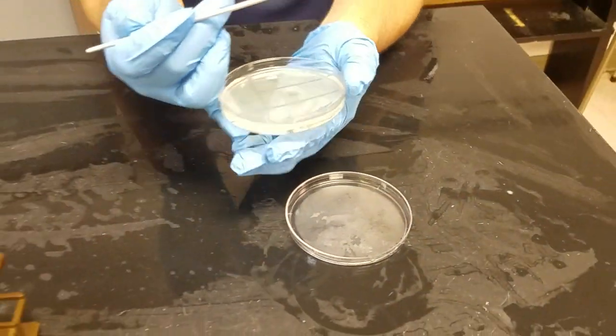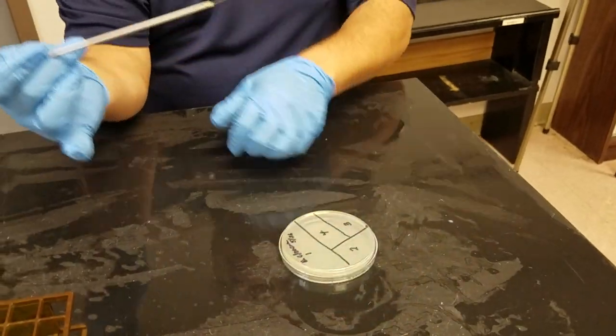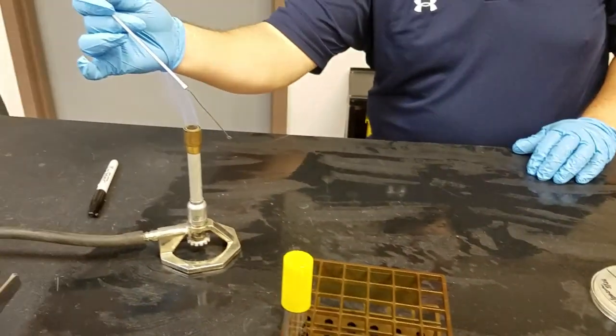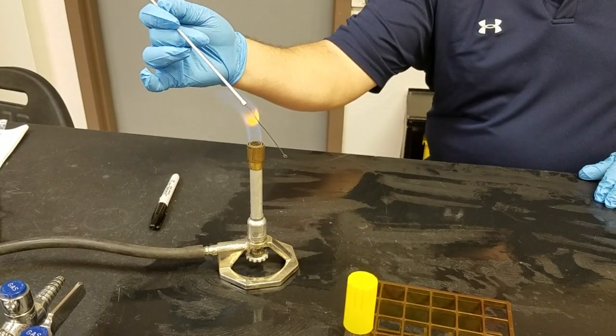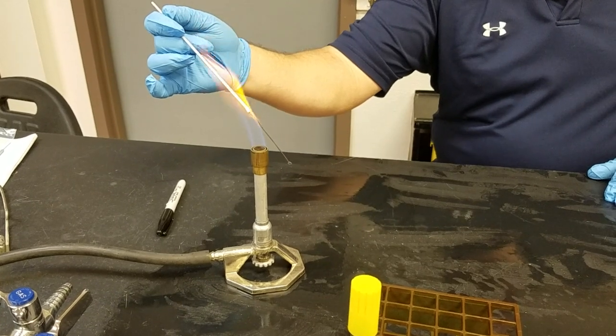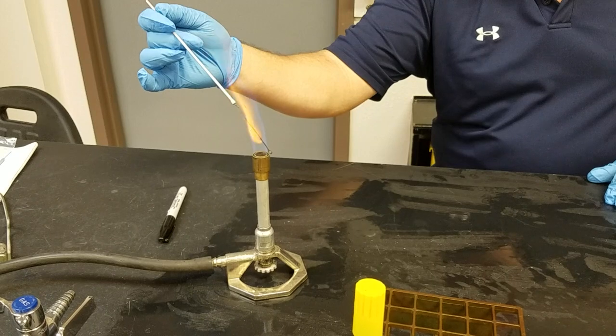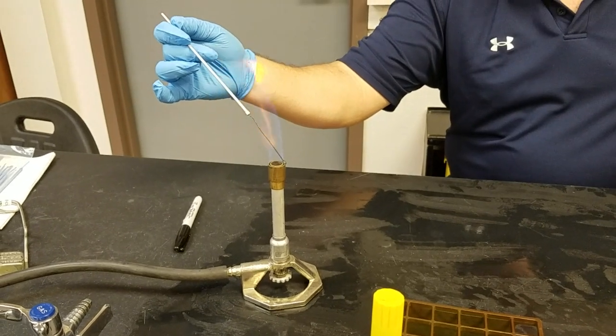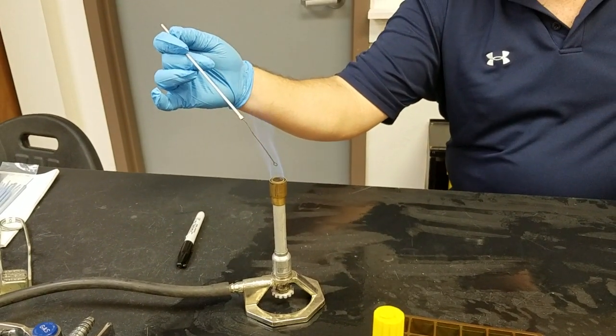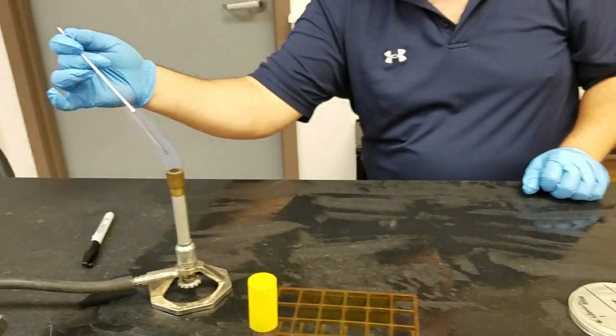Then I'm going to put that down and flame the loop because I'm not interested in the population on that loop - I'm only interested in the population of microorganisms that I have placed on that plate.